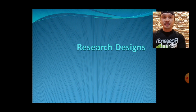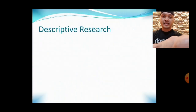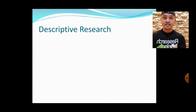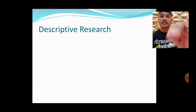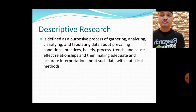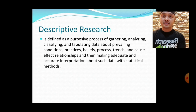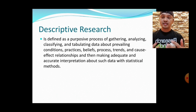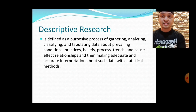We will start with the quantitative research design. One of the categories of quantitative research design is what we call descriptive research. Descriptive research is defined as a purposive process of gathering, analyzing, classifying, and tabulating data about revealing conditions, practices, beliefs, processes, trends, and cause-and-effect relationships. Out of this, you make an adequate and accurate interpretation about such data using a statistical method.